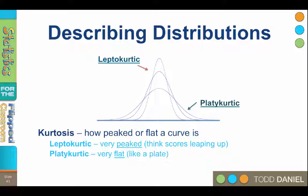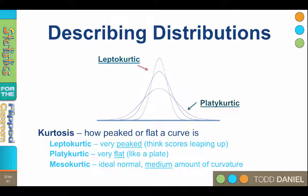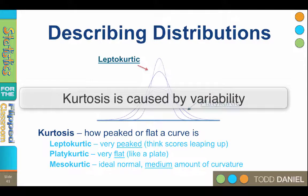A normal curve is mesokurtic. Its kurtosis is medium. So kurtosis can be measured as leptokurtic, tall, platokurtic, flat, or mesokurtic, medium. Kurtosis is caused by the variability in the distribution.